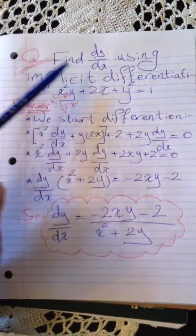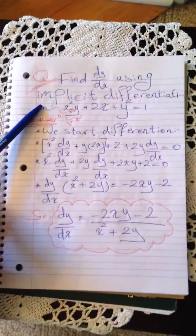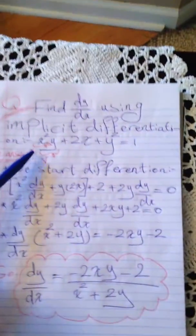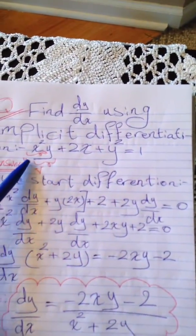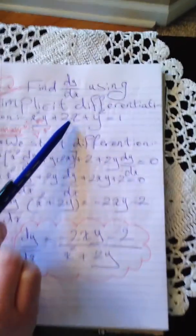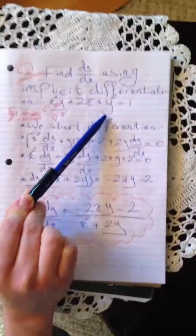The question is asking to find dy/dx using implicit differentiation. The equation is x²y + 2x + y² = 1.